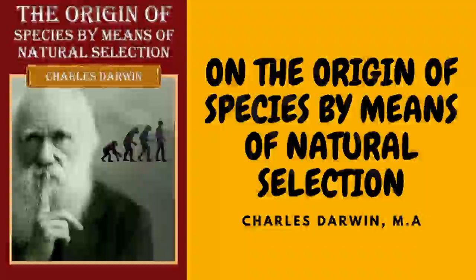Nevertheless, as our varieties certainly do occasionally revert in some of their characters to ancestral forms, it seems to me not improbable that if we could succeed in naturalizing or were to cultivate during many generations the several races — for instance of the cabbage — in very poor soil, that they would to a large extent, or even wholly, revert to the wild aboriginal stock. If it could be shown that our domestic varieties manifested a strong tendency to reversion — that is, to lose their acquired characters — whilst kept under unchanged conditions and whilst kept in a considerable body so that free intercrossing might check by blending together any slight deviations of structure, in such case I grant that we could deduce nothing from domestic varieties in regard to species.